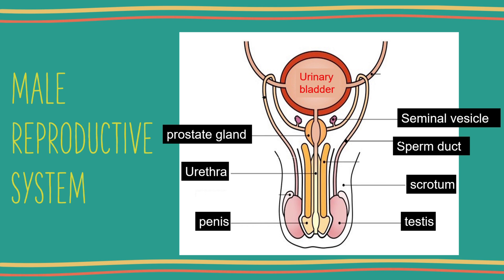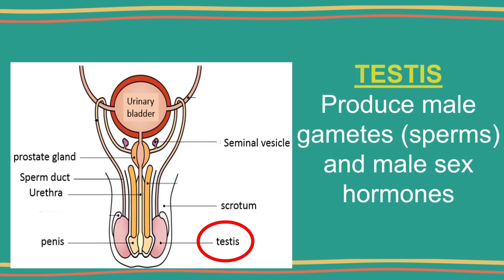The diagram shows the structures of the male reproductive system. The testes produce sperms and male sex hormones, for example, testosterone.